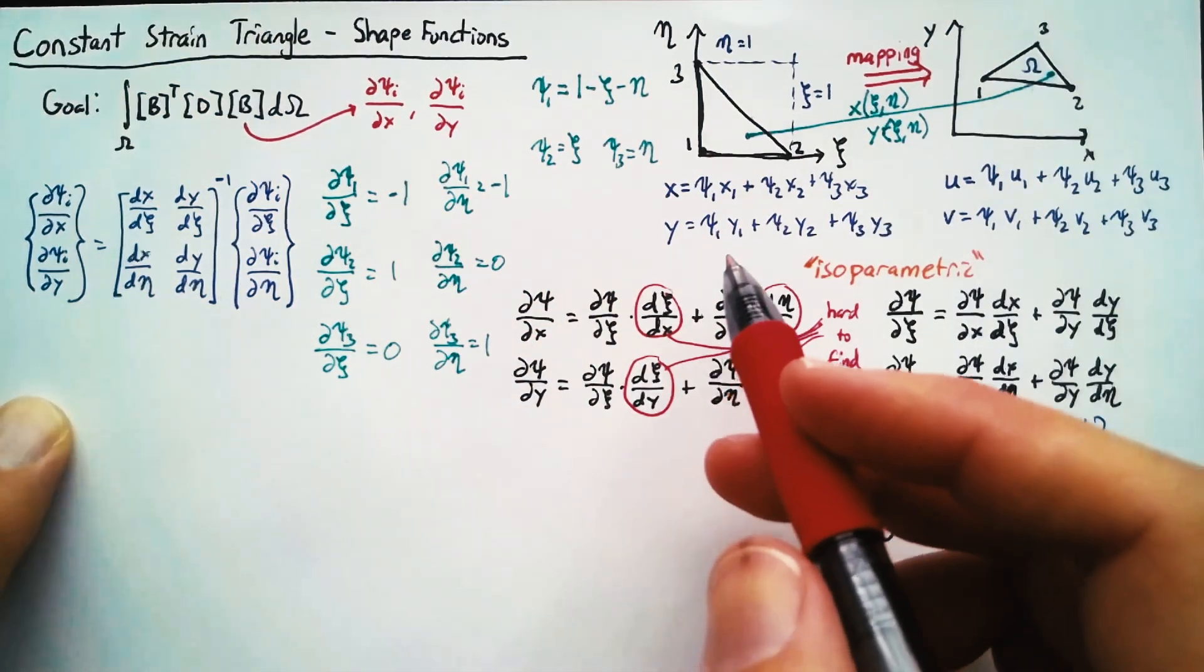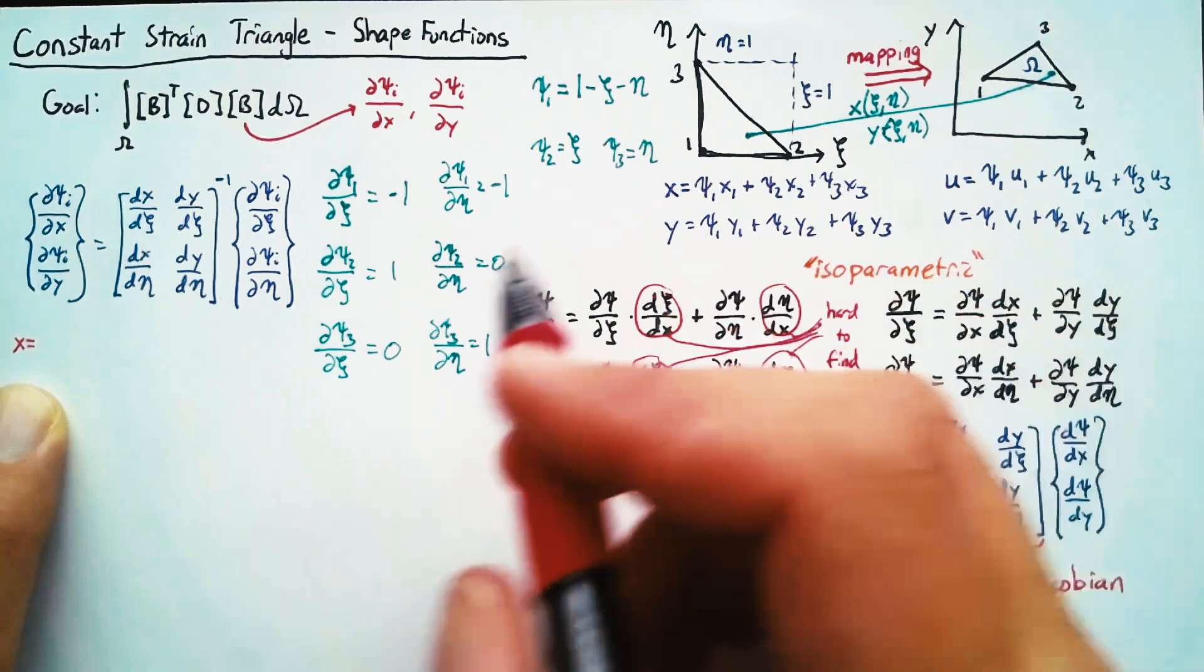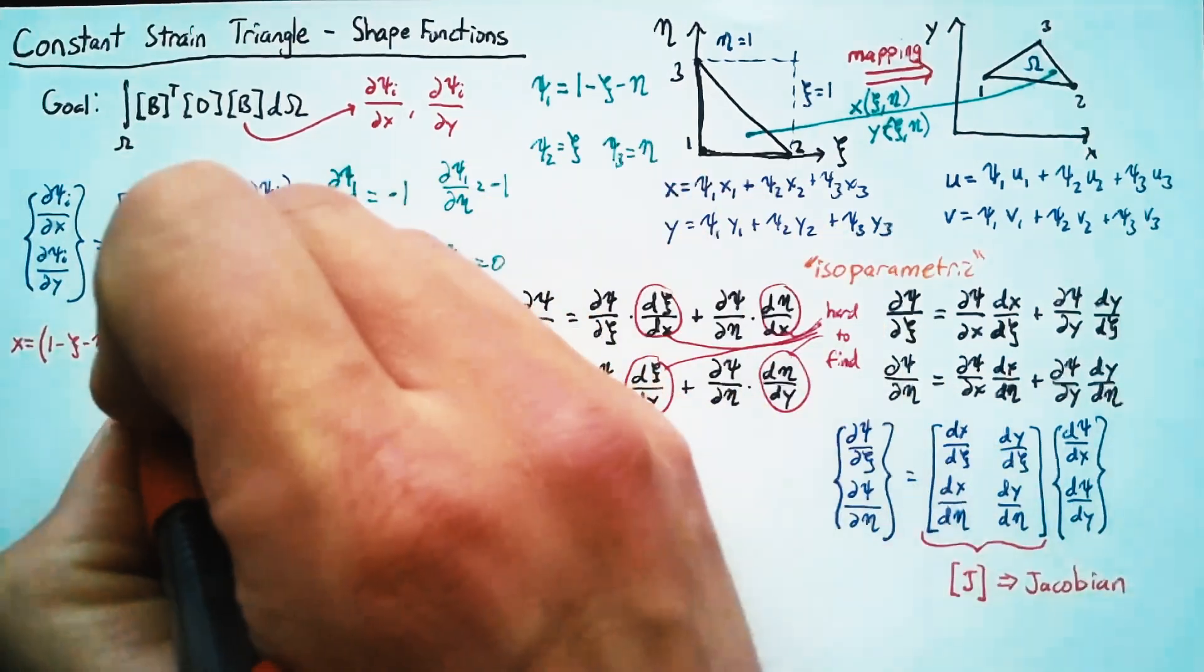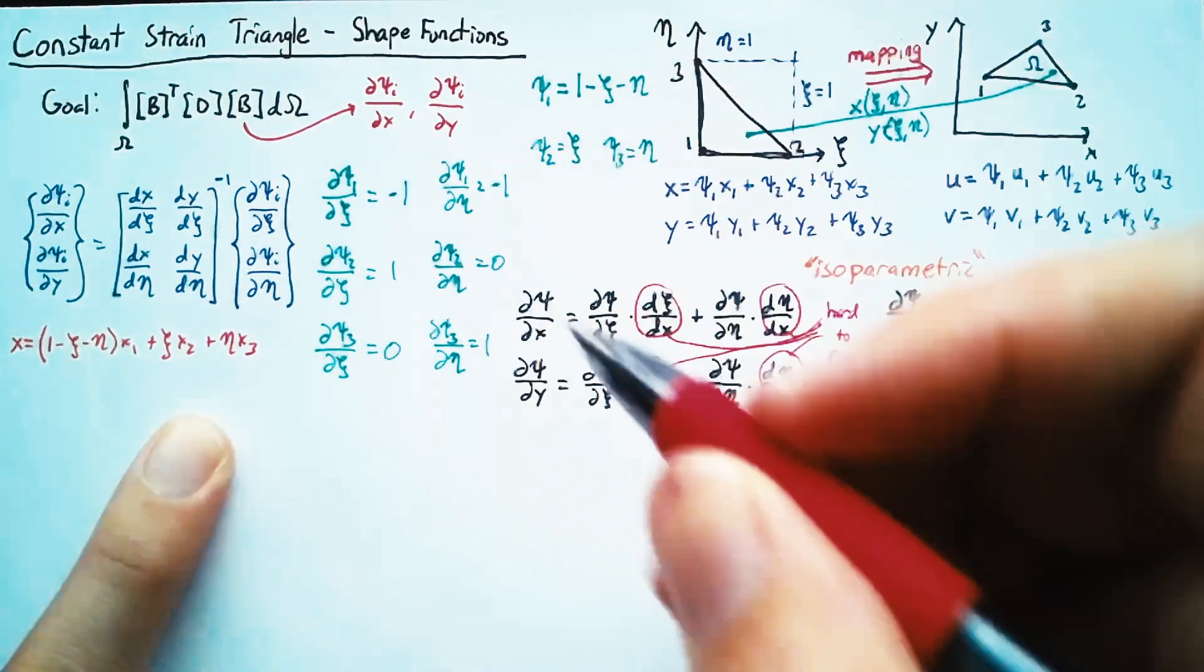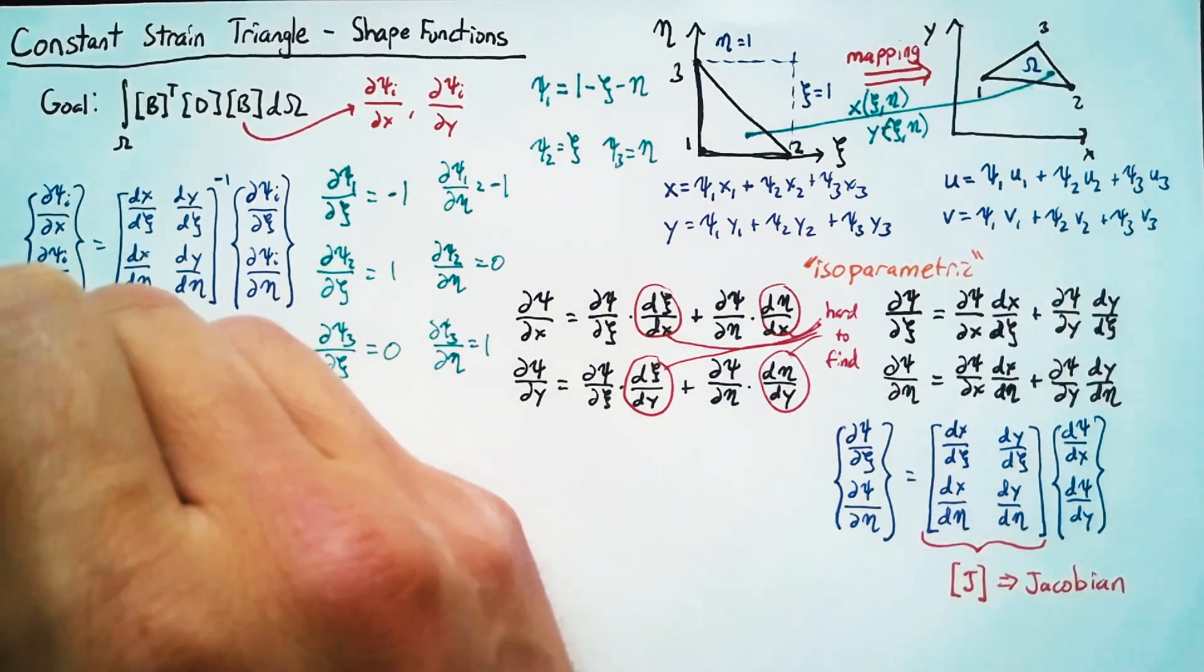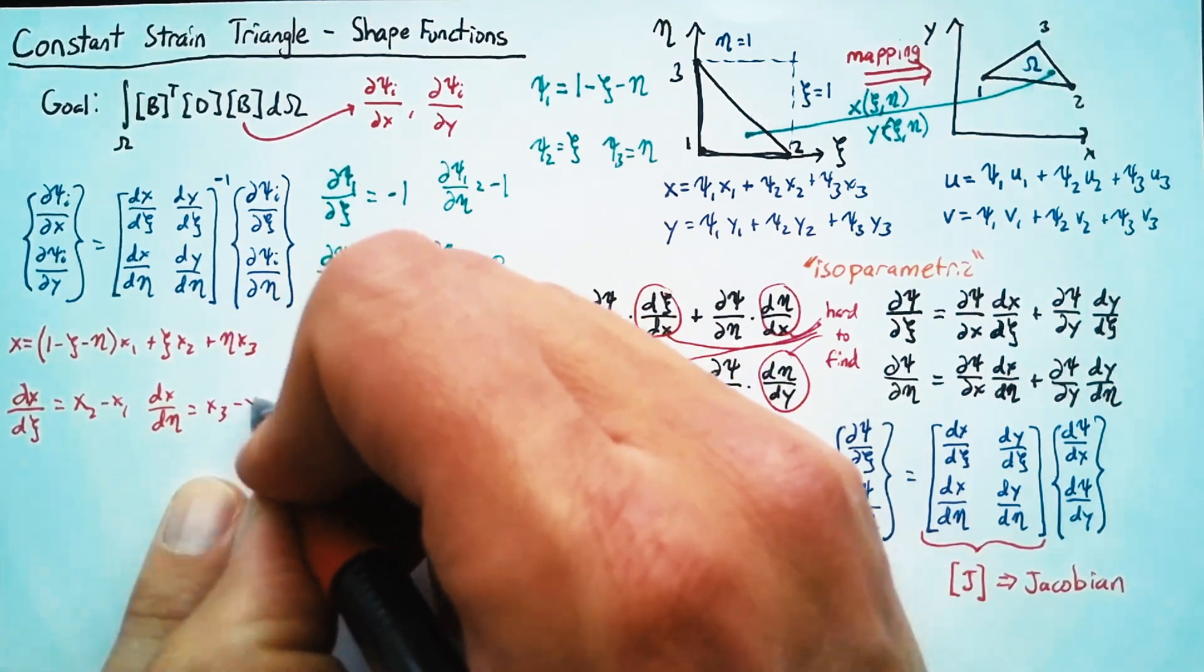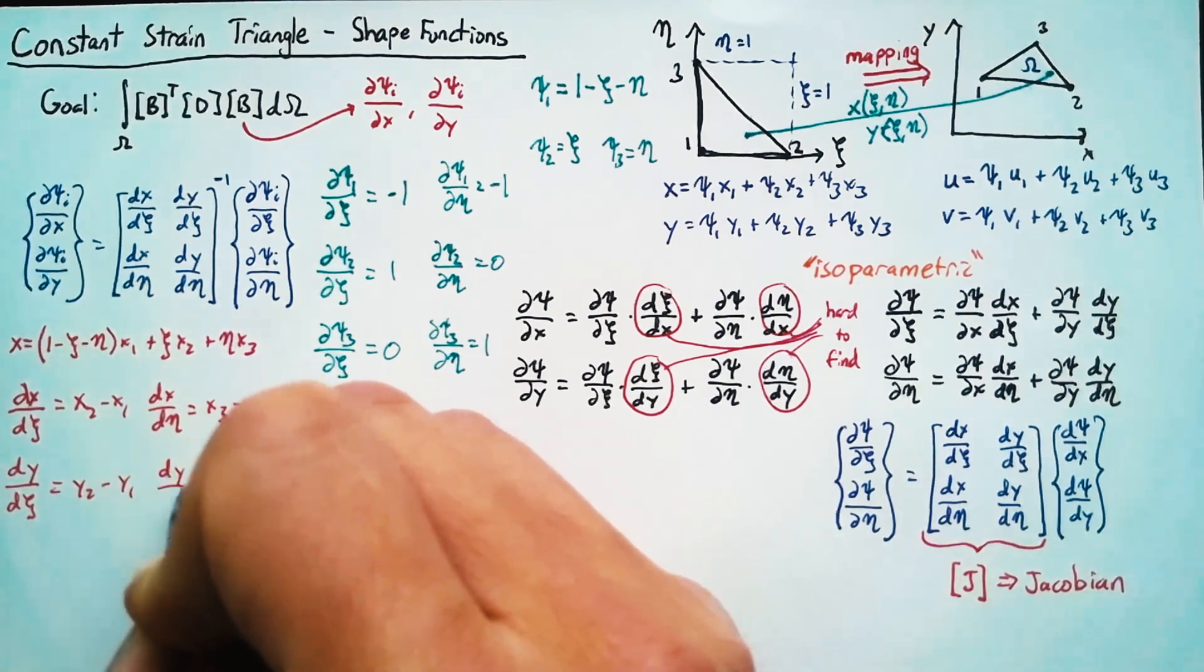Now, whenever we're calculating the derivative of x, it helps to go ahead and write out the entire thing. So x is going to be equal to one minus C minus eta times x one plus C times x two plus eta times x three. And so dx/dC is just going to be x two minus x one and dx/deta is x three minus x one. And to find the same for y, we just replace each of those x's with y's.